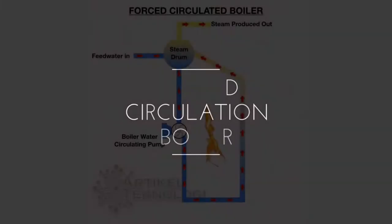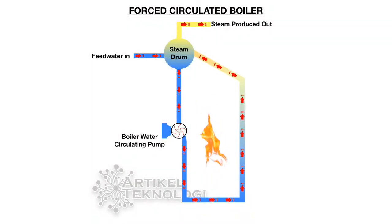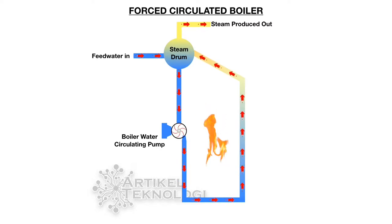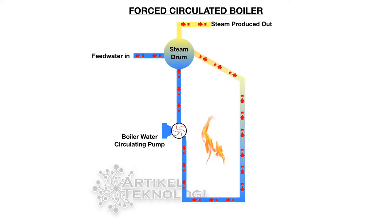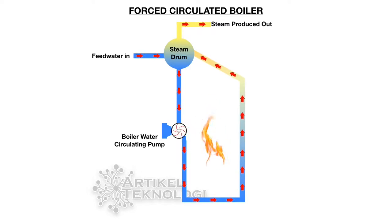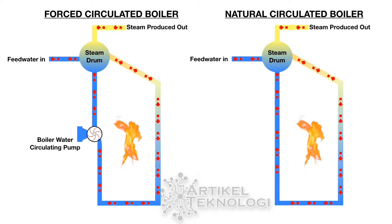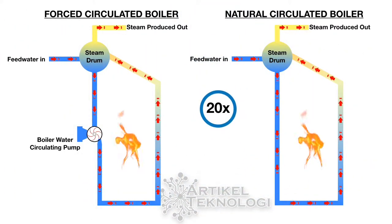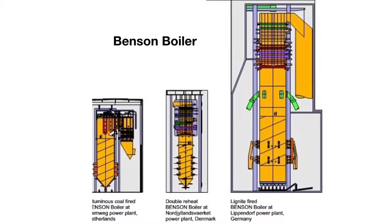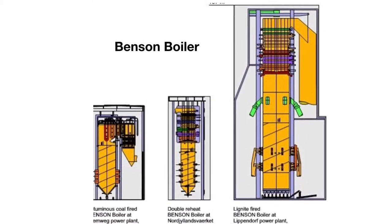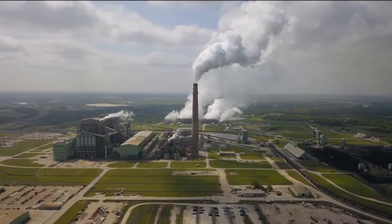Forced circulation boiler. Boilers with forced circulation use additional pumps to help the circulation of water. This type does not need to wait for water phase differentiation to circulate water. With external energy for the water circulation process, steam generation will not be limited by the size of the boiler. We can increase boiler capacity by only adding a circulating pump in the same boiler size. Forced circulation boilers can produce 20 times more steam than natural circulation boilers of the same volume. Examples include Benzen boilers and Subcritical boilers.